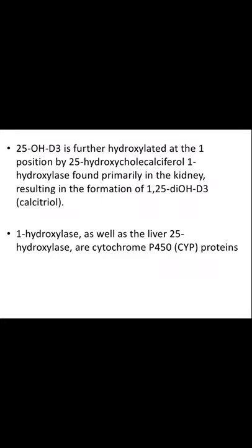25-hydroxycholecalciferol is further hydroxylated at the one position by 25-hydroxycholecalciferol 1-hydroxylase, which is present in the kidney, resulting in the formation of 1,25-dihydroxycholecalciferol. So you need two hydroxylations: first in the liver at the 25 position, and the second in the kidney by 1-hydroxylase at the first position.